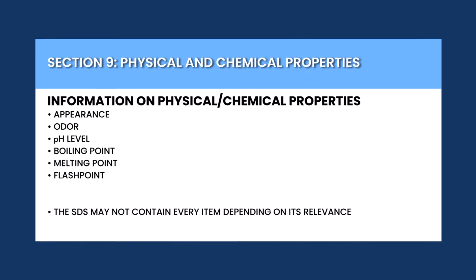Section 9 of the SDS provides information on the physical and chemical properties of the chemical. This includes important information such as appearance, odor, pH level, boiling point, melting point, and flash point, among many more. Understanding these properties is important for identifying potential hazards and taking appropriate precautions to avoid harm.